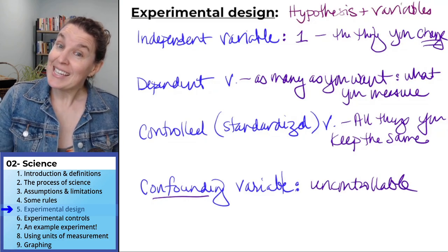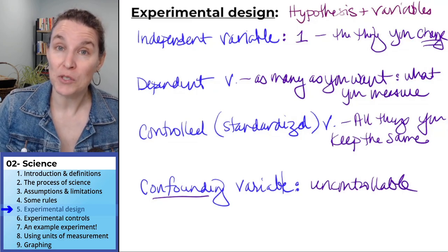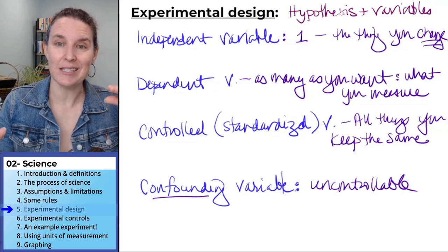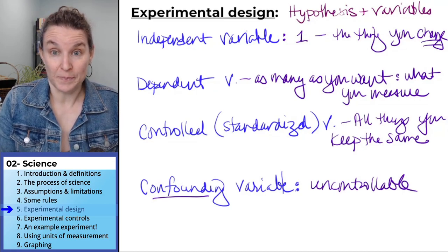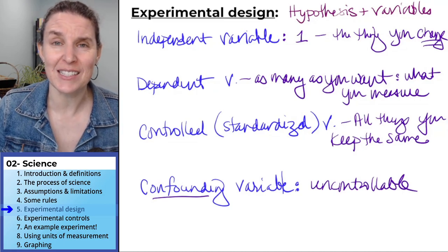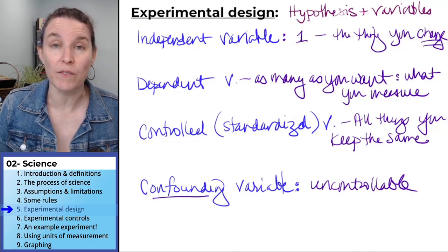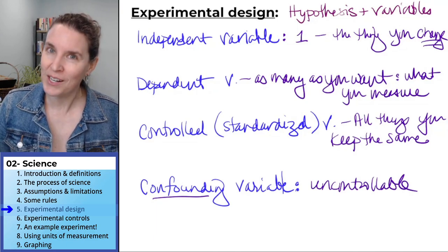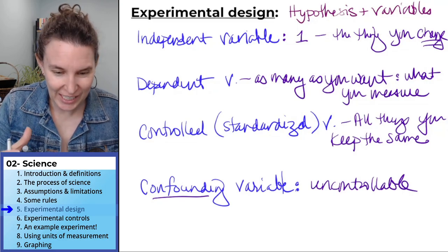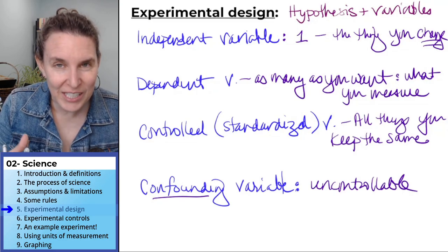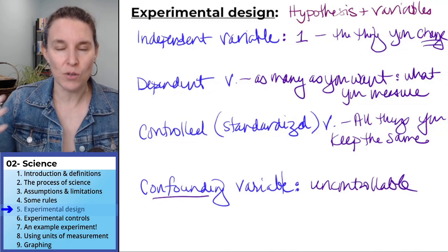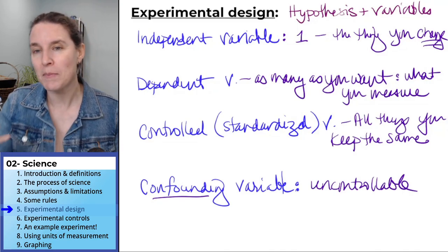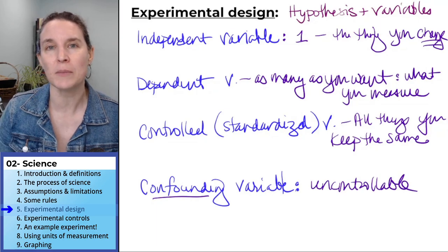But you can see how the more confounding variables you have, the less reliable your results are going to be. That's why it's so good to have a community of humans looking, a community of experts looking at the research, looking at the results, looking at the design, and ensuring that as many of those confounding variables are eliminated as possible.